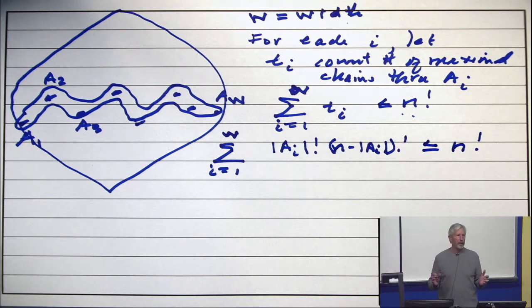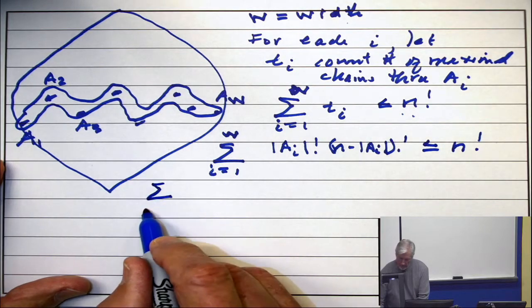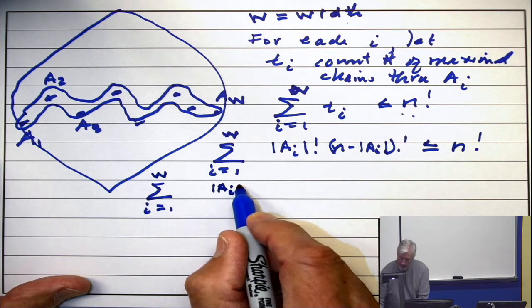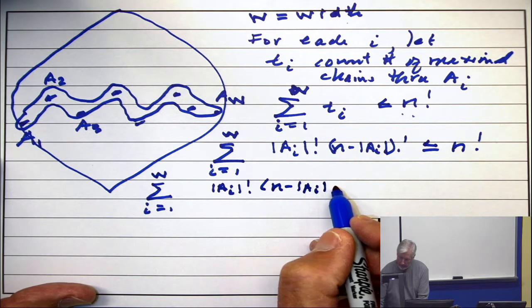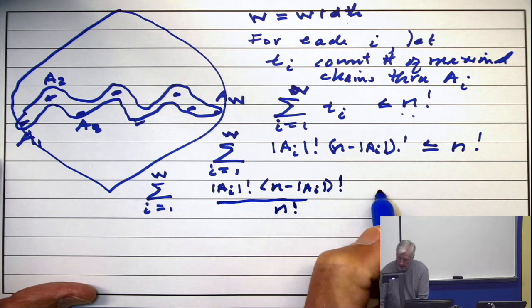Because I know what T sub i is. I just did that. That's the product of that. That's the product of two factorials that are determined by the size of the set A sub i. Okay, is that line clear? Now, divide both sides by n factorial. Summation i equals 1 to W of cardinality of AI factorial times n minus cardinality of AI factorial over n factorial is less equal to 1.